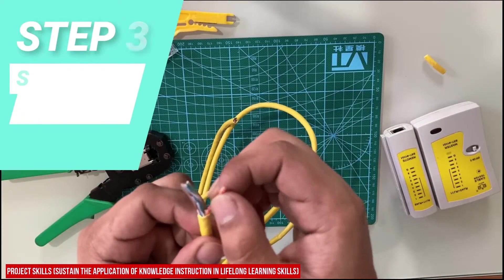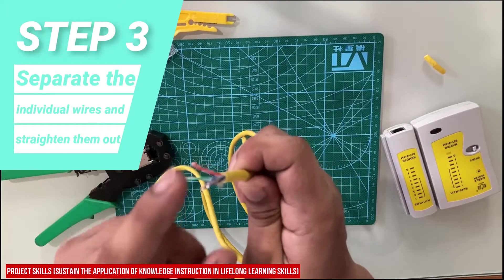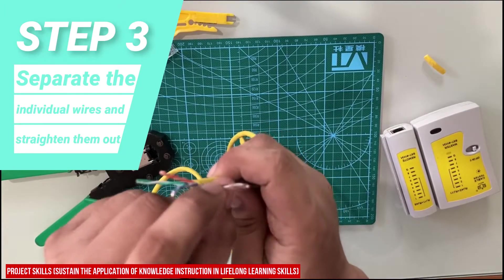The third step is you need to separate the individual wires and straighten them out. This will make your work a lot easier when you must put them in order.